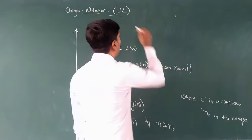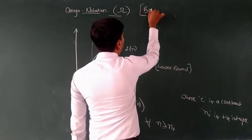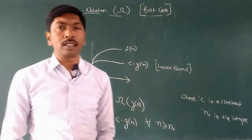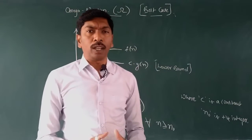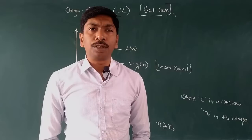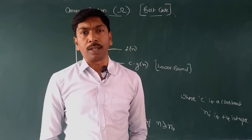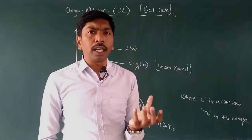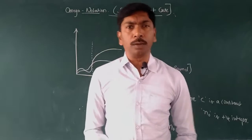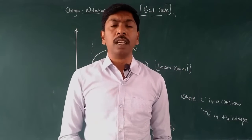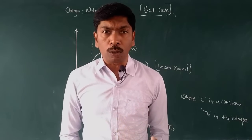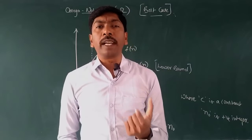Omega Notation means this is the best case. The minimum time taken by an algorithm for its execution is called Omega Notation. The minimum time is the best case — that is what Omega Notation is.